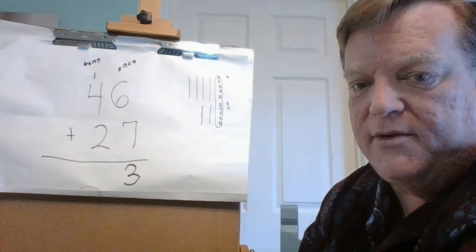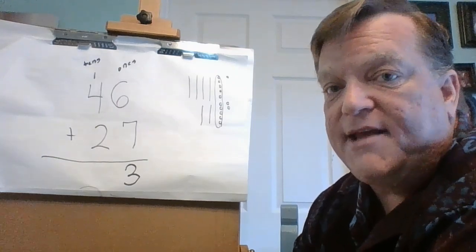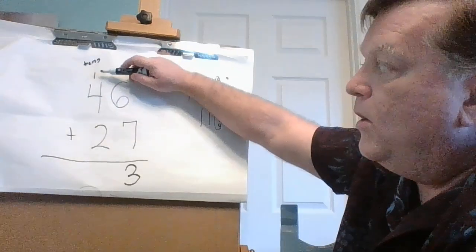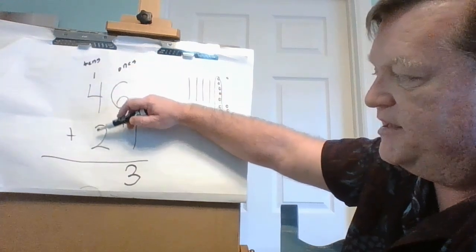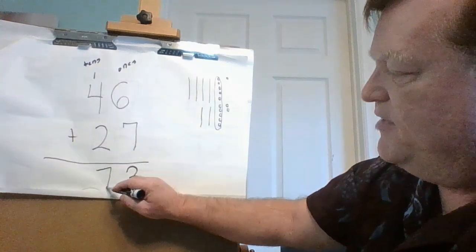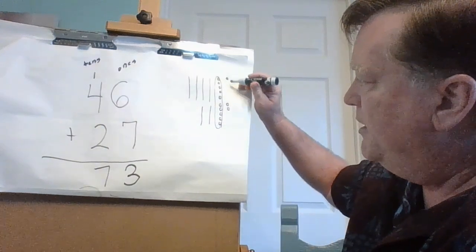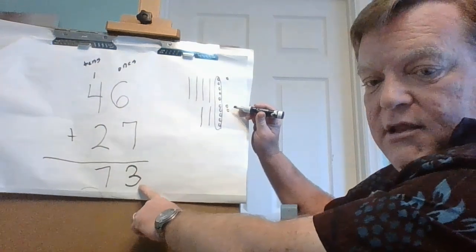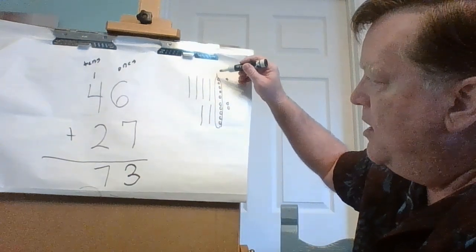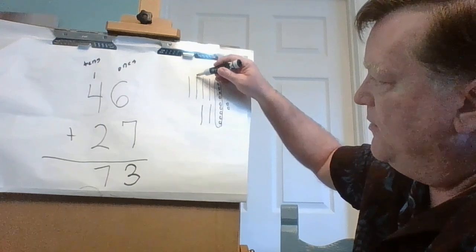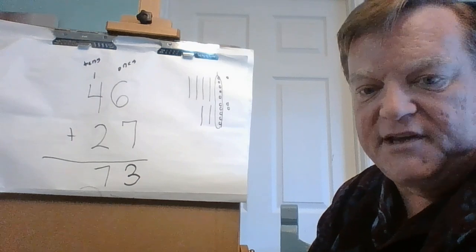Now what do I do? I've added the ones — what do I do next? That's right, I'm going to add the tens. One plus four is five, plus two more is six, seven. So 73. Let's check it against the model: count the ones — one, two, three — we have a three in the ones column. And count the tens — one, two, three, four, five, six, seven — seven tens. So 46 plus 27 is 73.